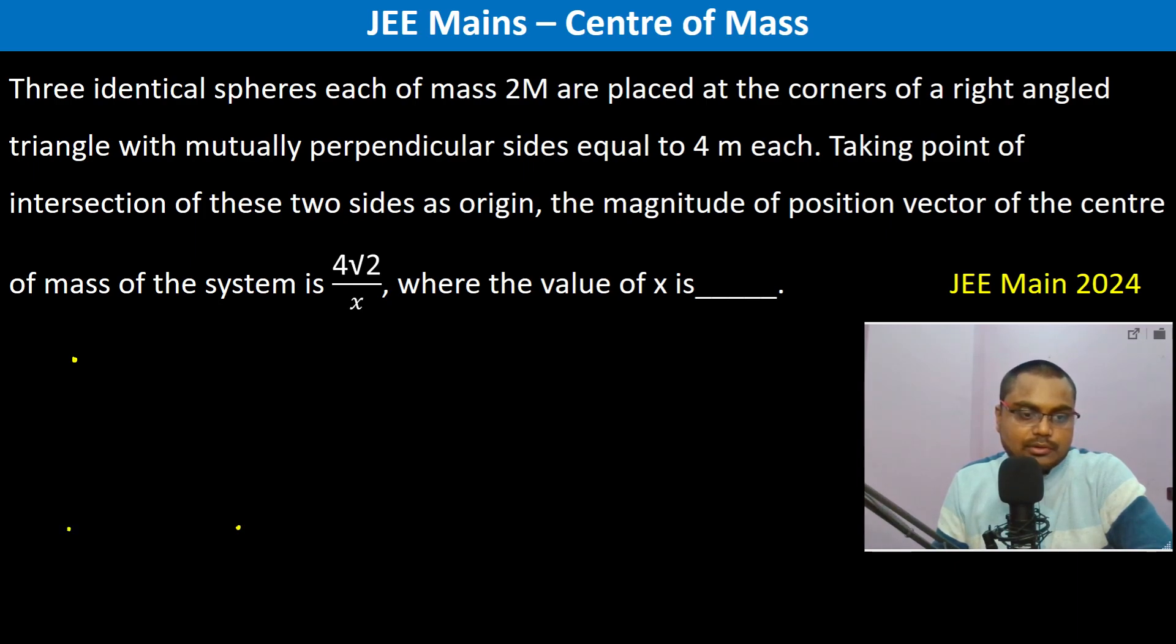So this is the right angle triangle. This is commas be 2m, this is commas be 2m, this is commas be 2m. The mutually perpendicular sides equal to 4m each.